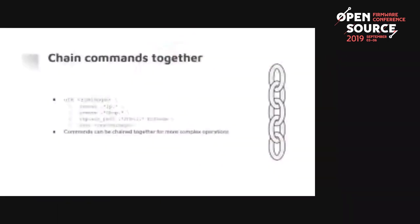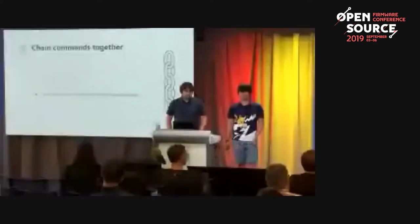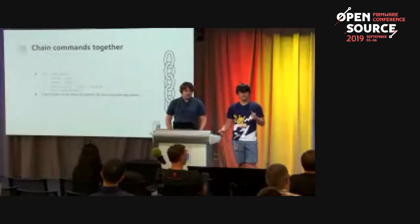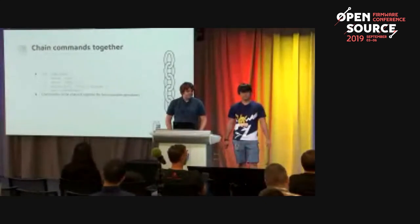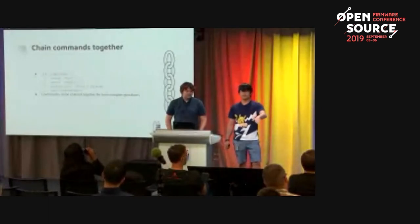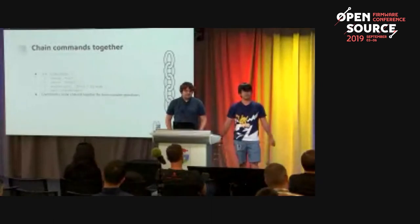You can chain commands together. For example, to remove all of the IP stack, DHCP, TCP, and add in LinuxBoot: run 'UTK ROM image', then remove them one by one, then replace the PE32, then save at the end. You can put all of this in a script and chain more and more operations together for complex modifications. At the end you can even output a table to see what's in the newly modified image.